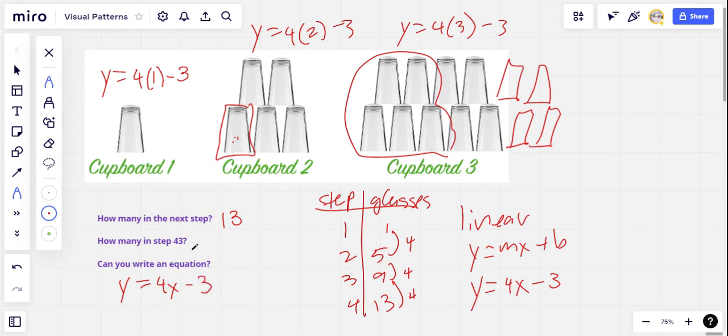Now we can use that to figure out how many glasses there are in that cupboard number 43. So Y equals four times cupboard 43 minus three. And let's see, four times 43, well, four times 40 is 160 and four times three is 12. So that's 172. And then we subtract three and we would get 169 glasses in cupboard 43. I guess that's a pretty big cupboard when we get to cupboard 43.